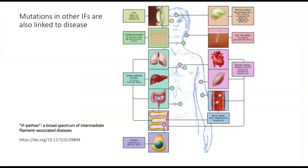Keratins aren't the only class of intermediate filaments linked to diseases. Mutations in other intermediate filaments are also linked to diseases that might affect the eye, the liver, the heart, and the muscle. There is a lot of research being done trying to develop drugs and genetic therapies to treat individuals with these inherited intermediate filament-based diseases.